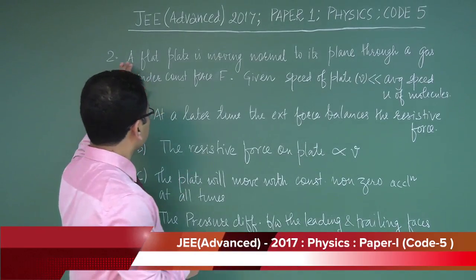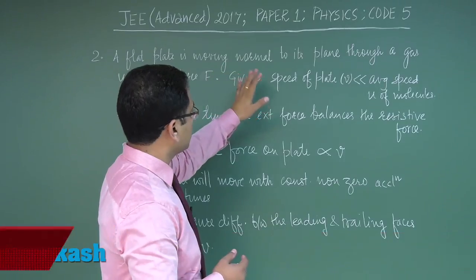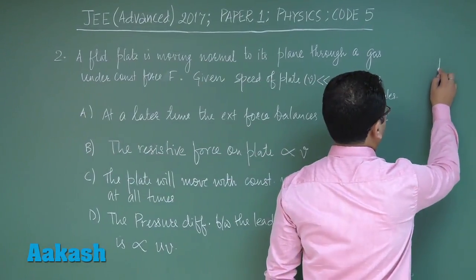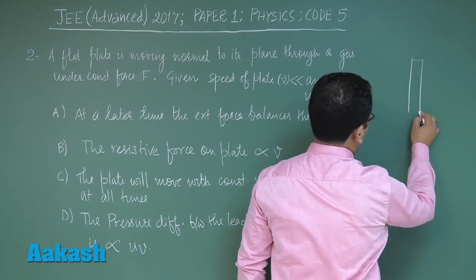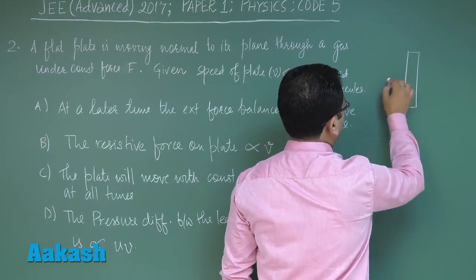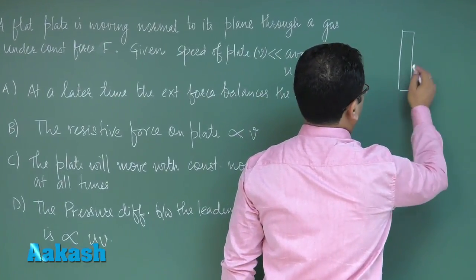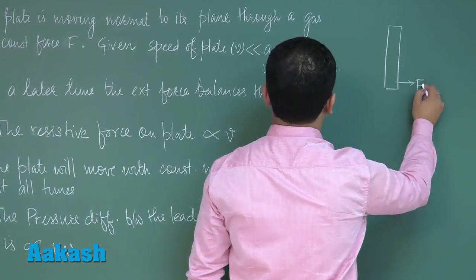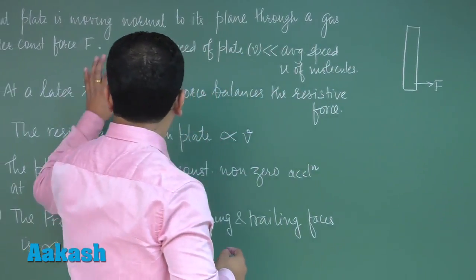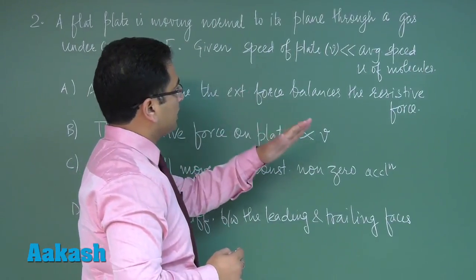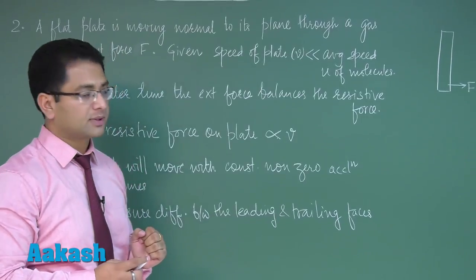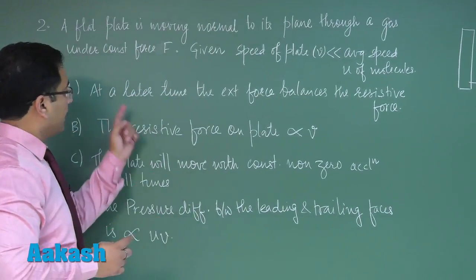The question states: a flat plate is moving normal to its plane through a gas under constant force. The gas molecules are there and this plate is moving under a constant force F. The speed of plate is very, very less than the average speed U of molecules.